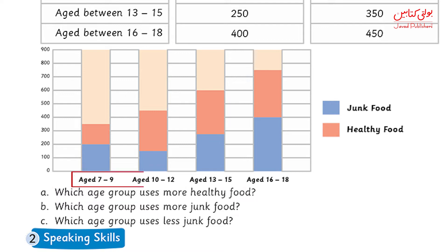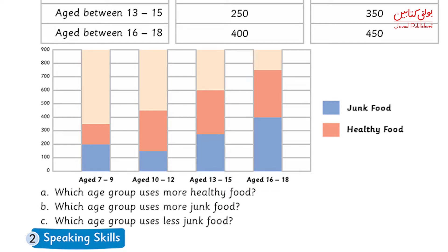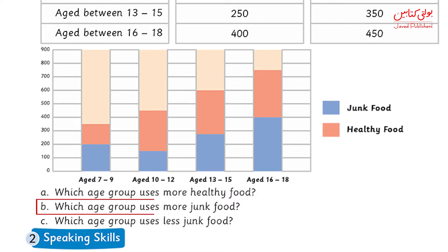You have age groups: 7 to 9, 10 to 12, 13 to 15, and 16 to 18. Let's see which age group eats more healthy food. The answer is 16 to 18, because you can see its number is 400. The next question is: which age group uses more junk food? Looking at the junk food column, the most junk food is more than 450 people, and that age group is also 16 to 18.